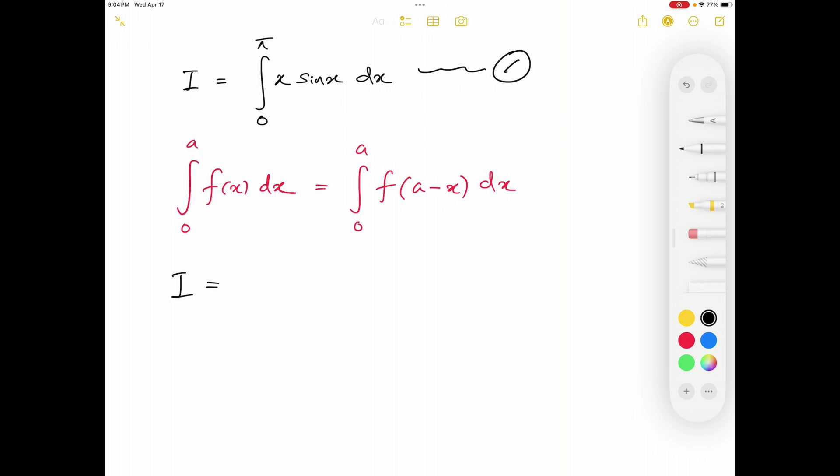Therefore, the given integral I will also be equal to from 0 to π, x will be replaced by the upper limit minus x. The upper limit is equal to π. So this first x right here becomes π minus x. π minus x, and then I have the function sin x. Function stays the same as sin. Right here I have x and that will be replaced by π minus x, and then we have dx.